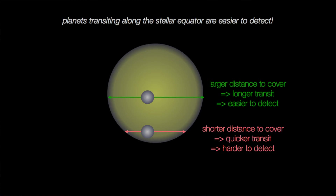Besides this obvious geometric bias, there are subtler biases associated with the transit method as well, which David Kipping and I spent time thinking about in a recent paper. We've seen in the Kepler data that we're more likely to see a planet transiting across the center or midpoint of its star than across the edge. If orbital inclination is actually random, we shouldn't see that preference. It turns out that transits across the equator are actually easier to detect — there's a detection bias — because transits across the equator take more time, since there's more of the star to cross, making them more likely to stand out against the random measurement noise in our data.